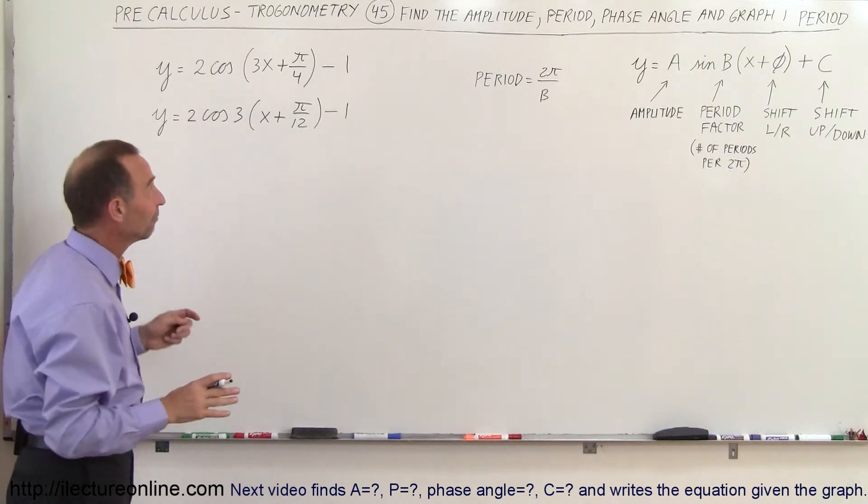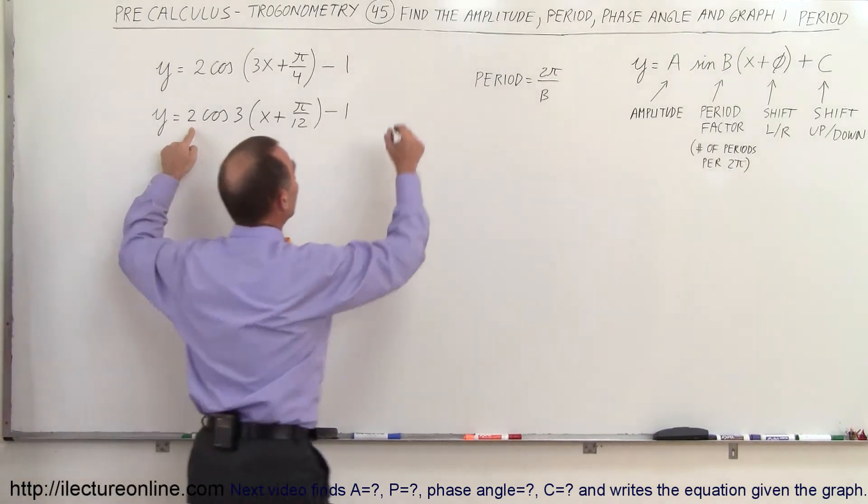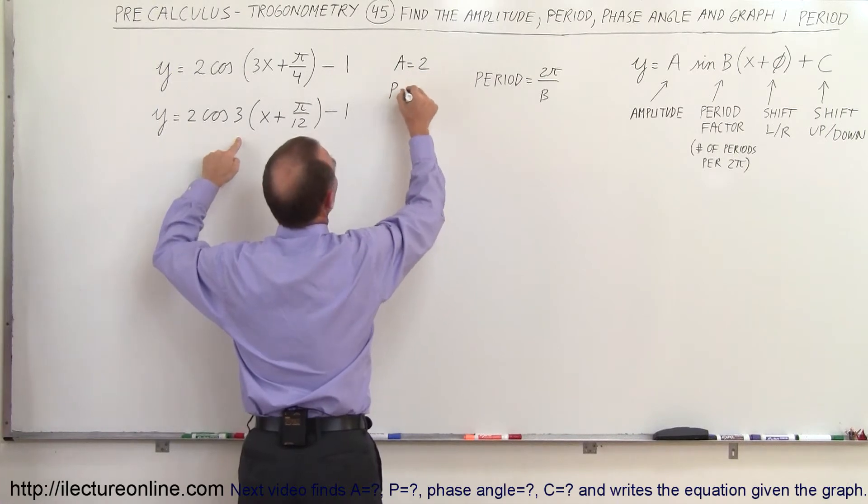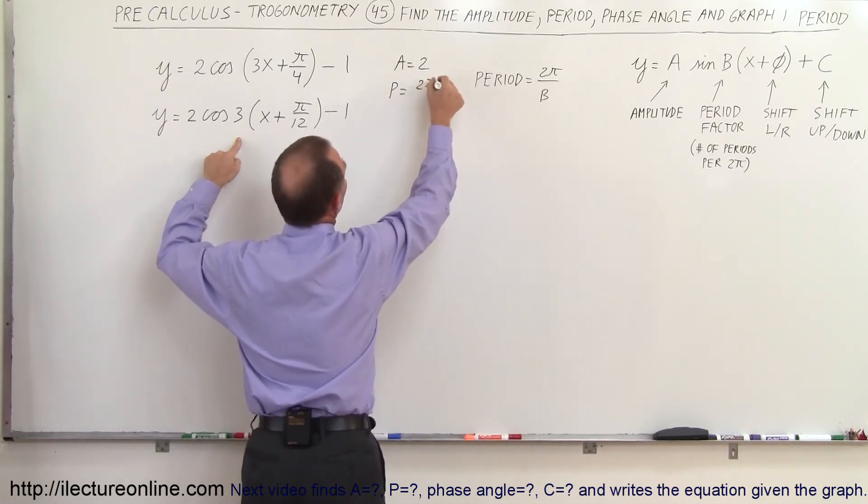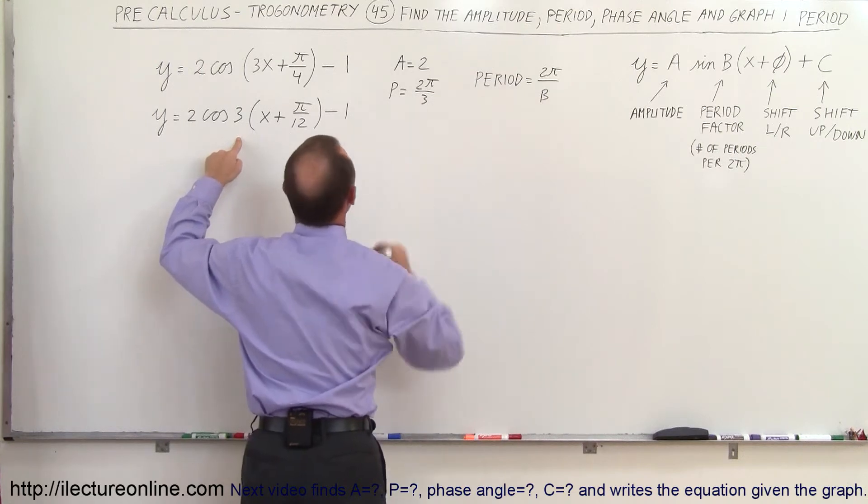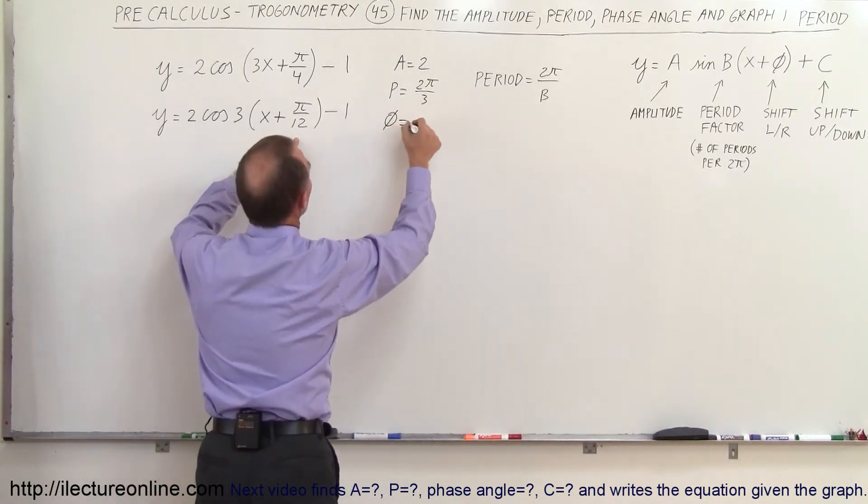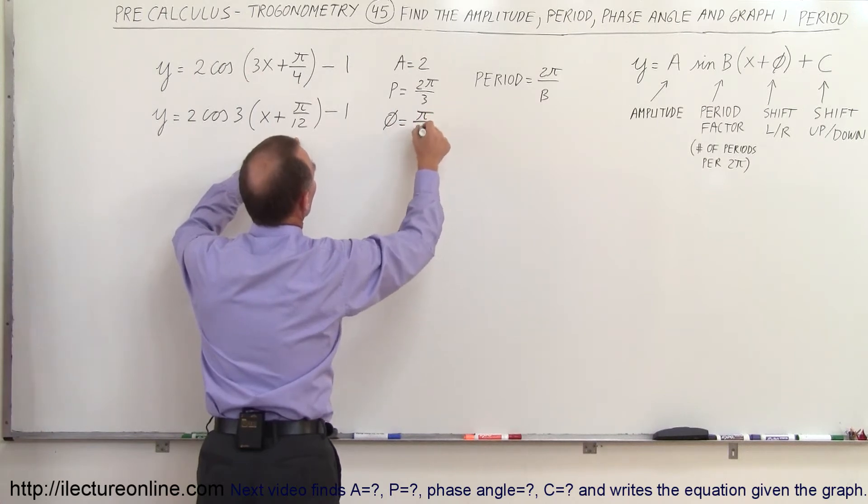So now you're ready to go ahead and find the amplitude. The amplitude is 2. The period will be equal to 2π divided by 3 which is equal to 2 thirds π and then finally the phase angle is equal to π divided by 12.